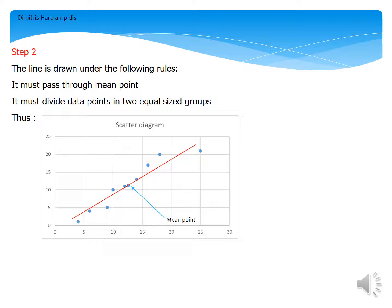Indeed, the red line in front of you, which is actually the line of best fit for the given data, does split our data points into equal size groups. Notice that on top of this line there are exactly 5 points, while under it there are exactly 4 points.